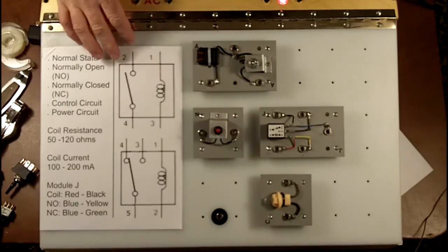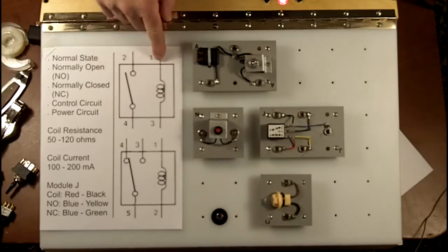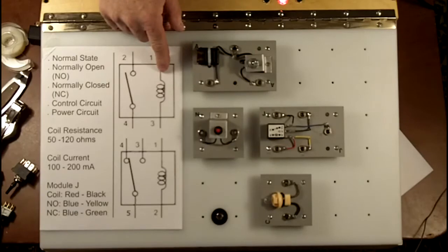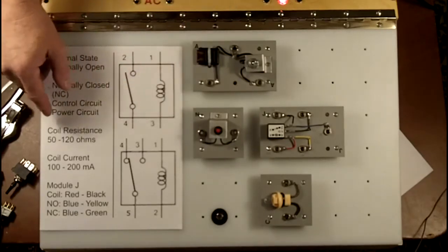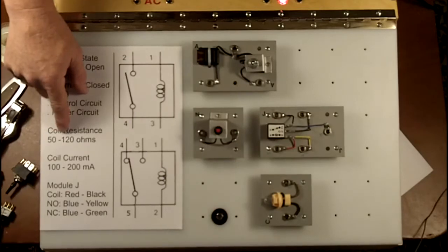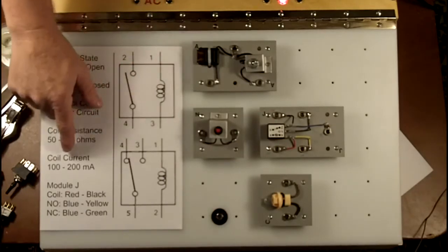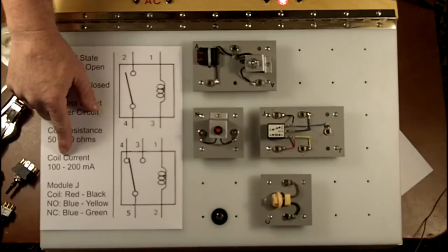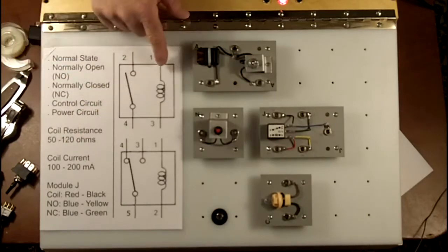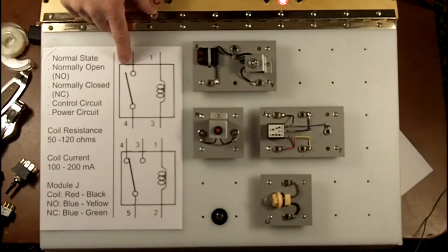Relays are made up of two parts. There's a control side, the part that controls the relay. This is made up of a winding or coil. This coil has a resistance of about 50 to 120 ohms. So if you do your math with Ohm's law, you'll find that the typical automotive relay will allow about 100 to 200 milliamps of flow. This flow of current creates a magnetic field which pulls the switch shut.